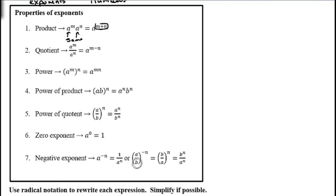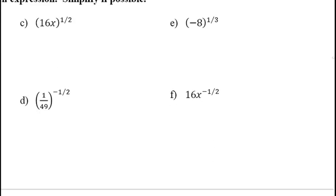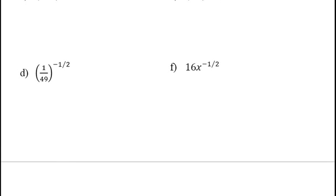If you have a fraction a over b raised to a negative power, flip the fraction and make the exponent positive: a over b to the negative n equals b over a to the positive n, and then you can raise b to the nth and a to the nth. That's a quick review of the properties of exponents.